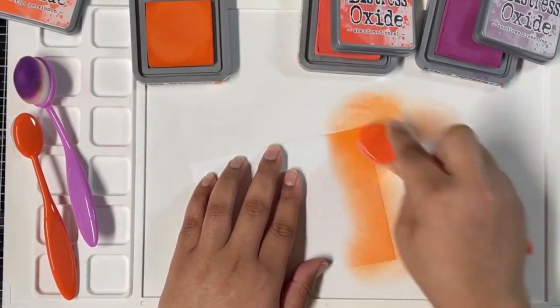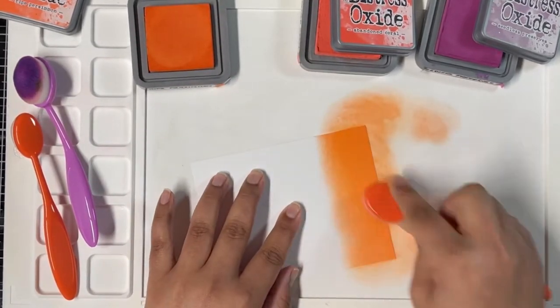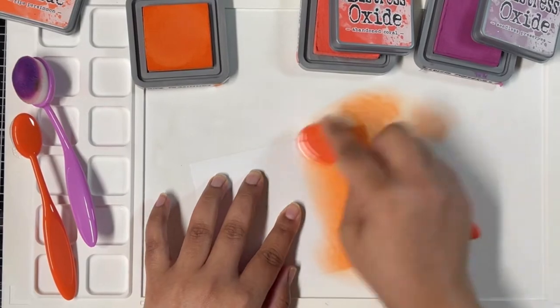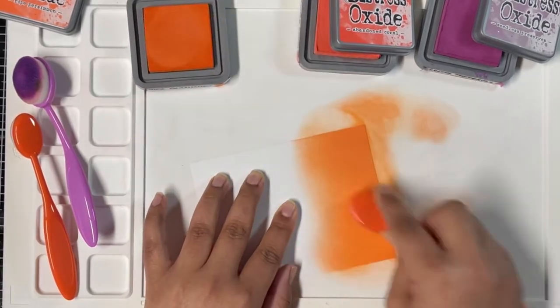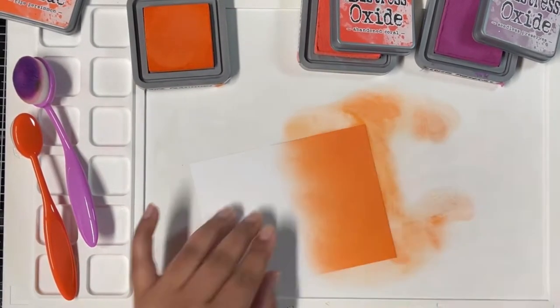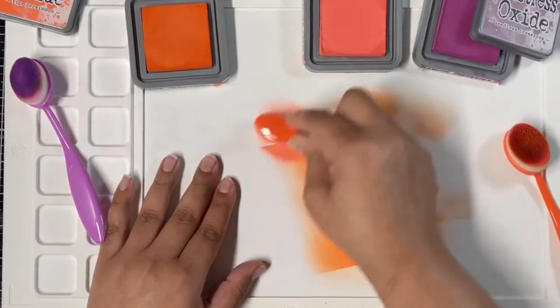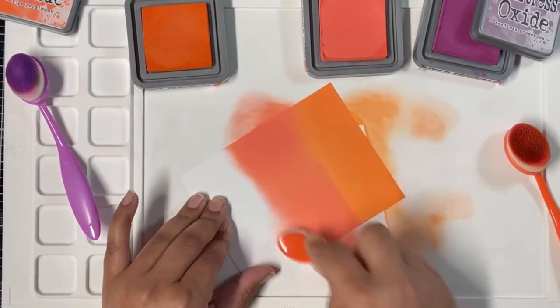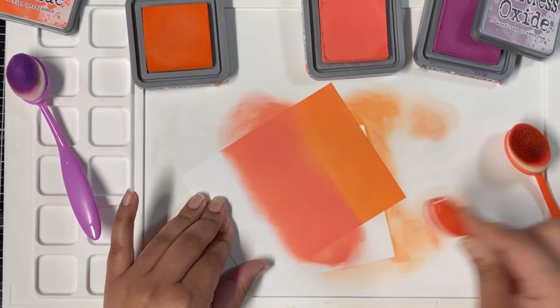I'm starting with some ink blending using my Distress Oxides and blending brushes. For my first background, I'm using Ripe Persimmon, Abandoned Coral, and Seedless Preserve Distress Oxide inks. You can choose any inks you want for this technique—you can use regular Distress inks, dye inks, or even watercolors, whatever is available.